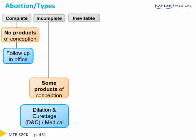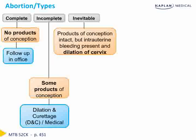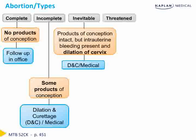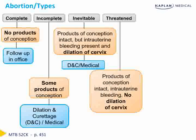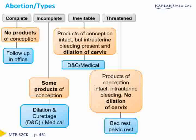With the inevitable abortion, products of conception are intact, but there is intrauterine bleeding present and the cervix is dilated. Again, we have the option of surgical management with a dilation and curettage or medical management to clear out the uterus. With the threatened abortion, products of conception are intact with intrauterine bleeding present but no dilation of the cervix. In this case, the option is watchful waiting — bed rest or pelvic rest — to see whether this will evolve into another type of abortion or resolve into a normal pregnancy.